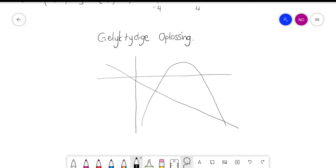One is a parabola and the other is a straight line.